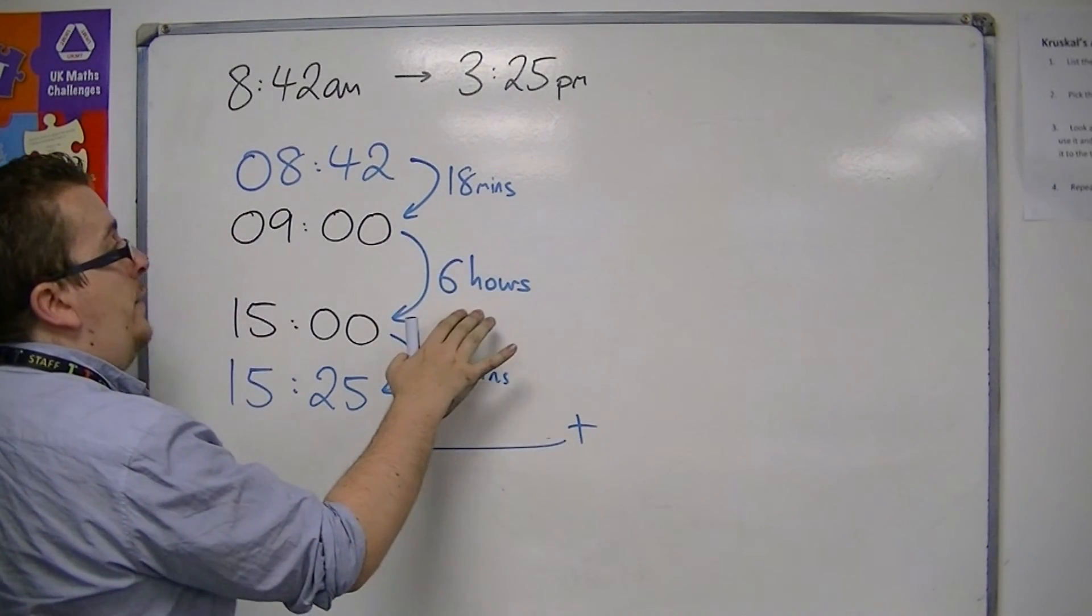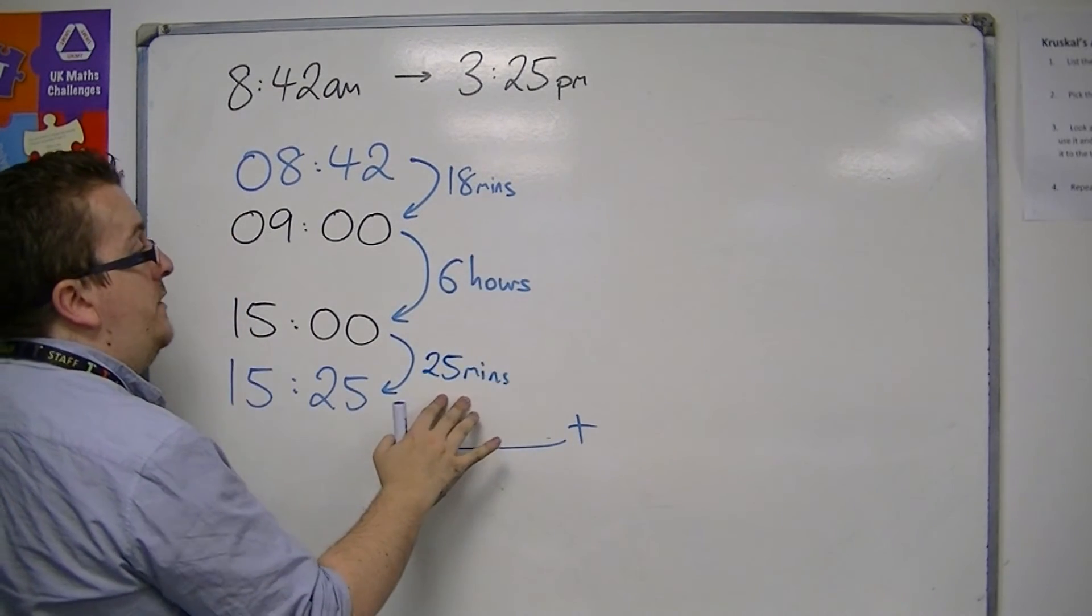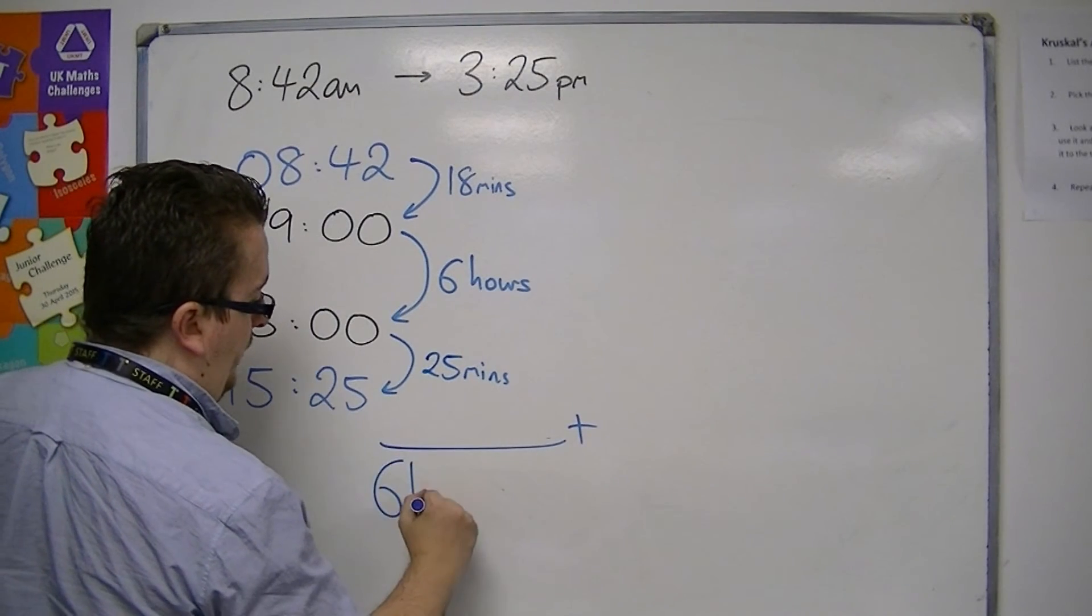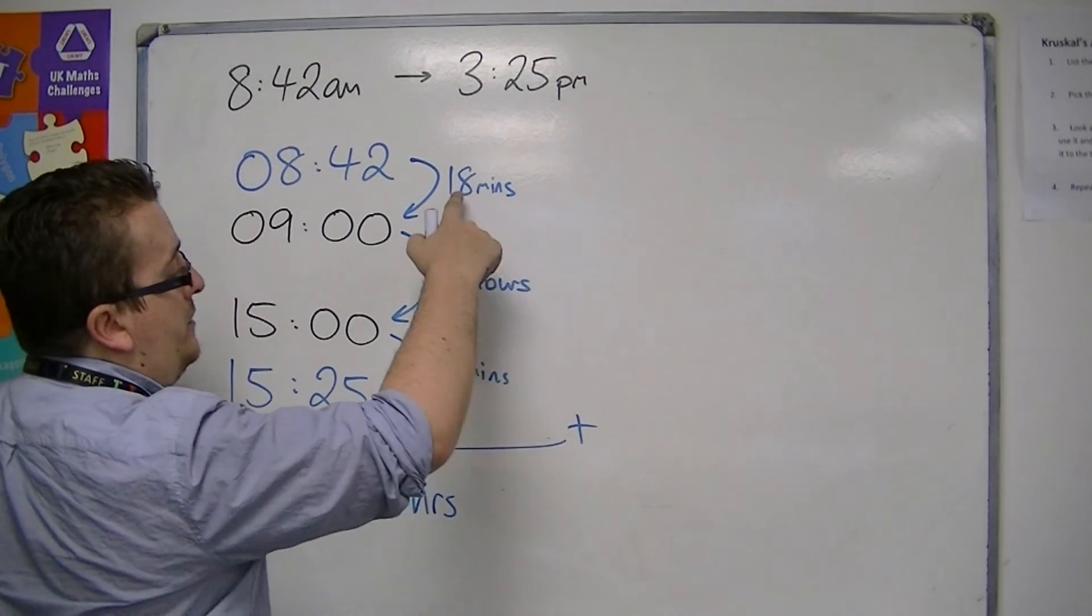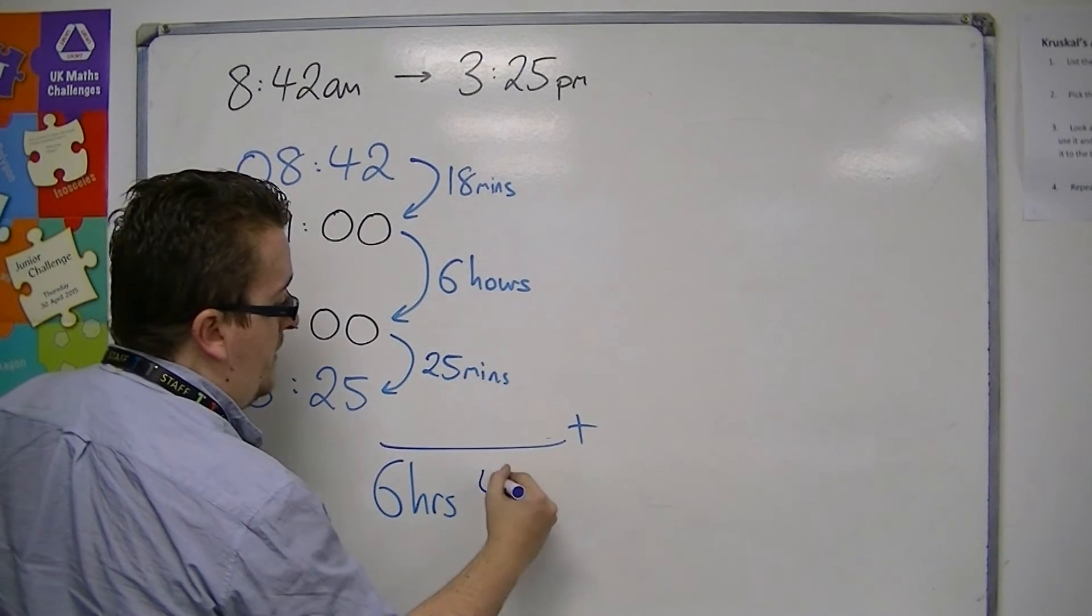So we have 6 hours, 18 minutes and 25 minutes makes 6 hours and, well, 18 plus 25 is 43 minutes.